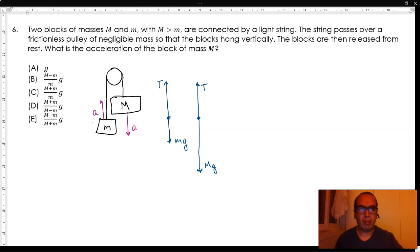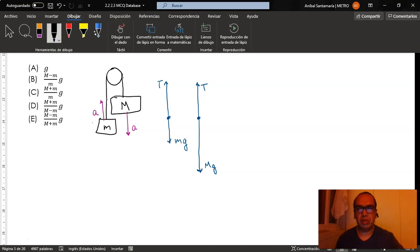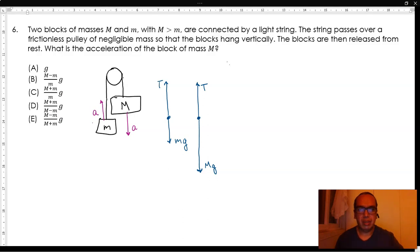Now because the acceleration is the same for both masses, we can establish the following equations. The tension minus mg is equal to m times acceleration. Big Mg minus the tension is equal to big M times acceleration, and we are interested in this acceleration.